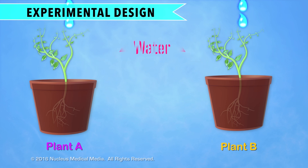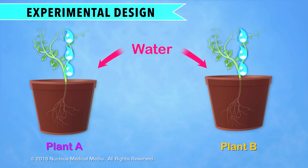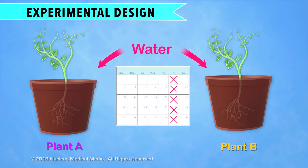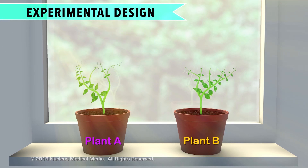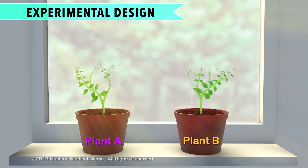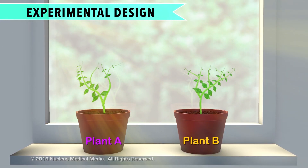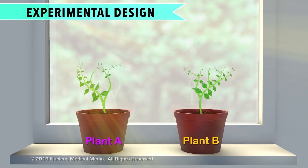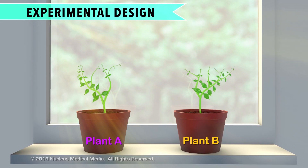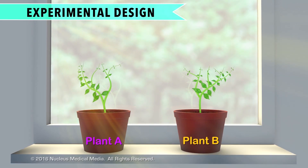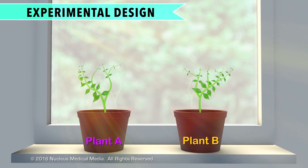You would water them both the same amount at the same times. You would also put the plants next to each other in the same place, such as a windowsill, so that they're both exposed to the same amount of sunlight and kept at the same temperature.